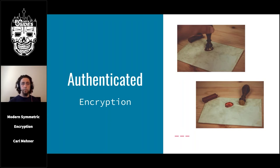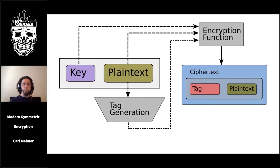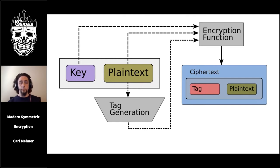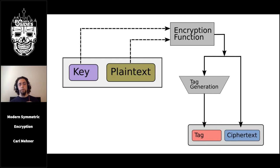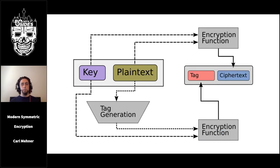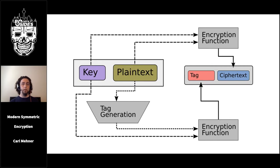There are several different ways to perform this authentication. One way — used by the original design of SSL and TLS — is to put the authentication tag over the plain text and then encrypt both together. Another way is the opposite: encrypt the text and then create an authentication tag from the encrypted value. A third way combines both ideas. With any of these choices, if an authentication tag doesn't validate upon decryption, decryption returns an error rather than the plain text.